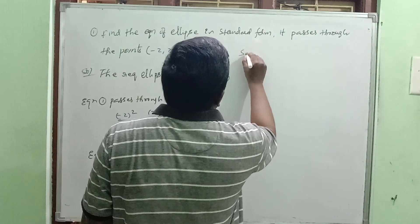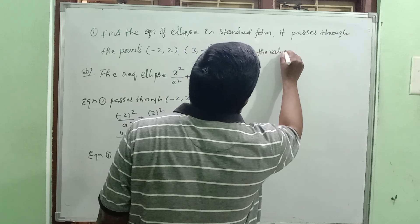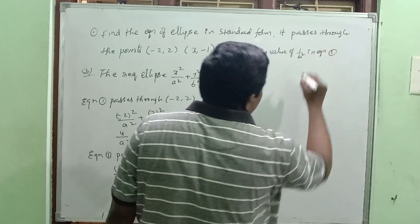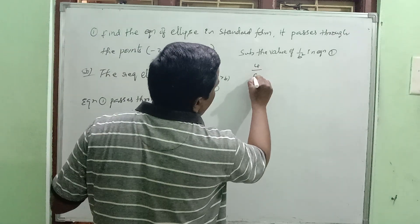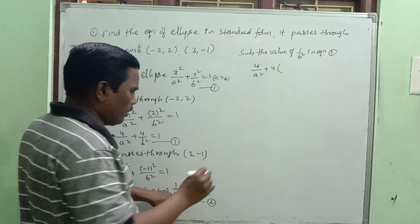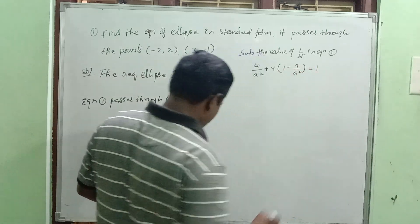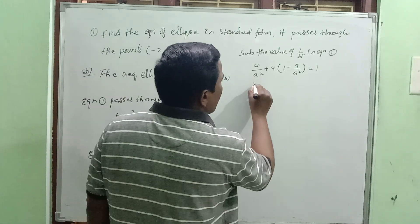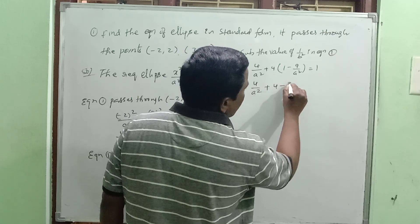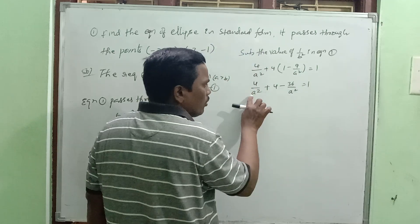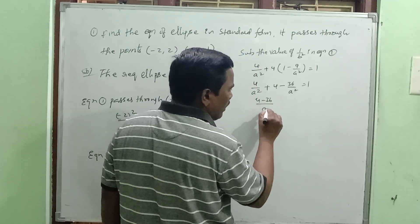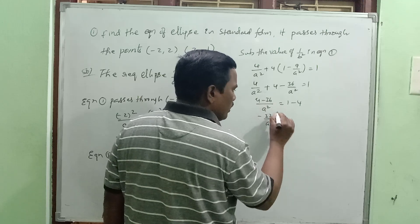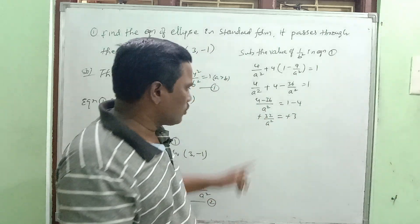Now substitute the value of one by b squared from equation two into equation one. We get four by a squared plus four times one minus nine by a squared equal to one. Simplifying: four minus 36 by a squared equal to one minus four. So 36 minus 32 by a squared — solving, 32 by a squared equal to minus three.